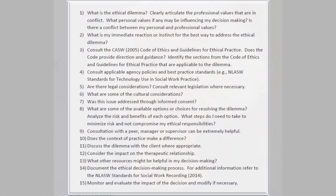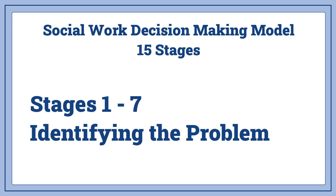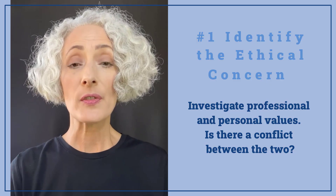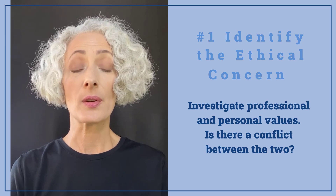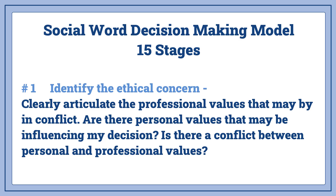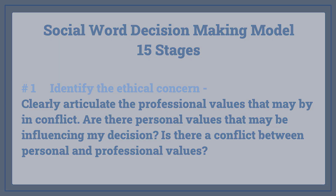Even though we're not social workers, it is a similar profession, so I'll cover the ethical decision-making model for social workers. This model has 15 stages — they're broken down in a way that is more comprehensive than the previous two models. Stages one through seven have you identifying the problem. Stage one is to identify the ethical concern — clearly articulate the professional values that may be in conflict, and ask whether your personal values are influencing the decision-making process or creating a conflict with your professional views.